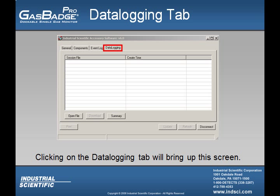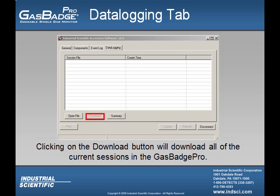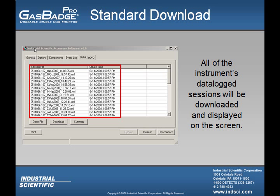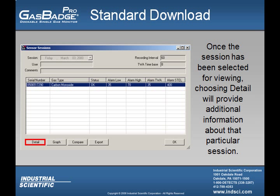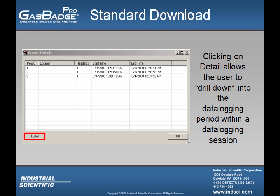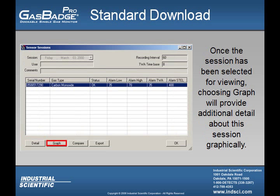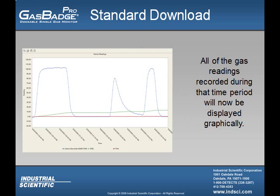If the user clicks on the Data Logging tab, they will see the data logging screen. Clicking the Download button, the Datalink software will download all of the current sessions within the Gas Badge Pro, and all instrument sessions will be displayed on the screen. If the user wants to open one of the sessions, they must highlight the session and click on the Open File tab. Once that session is open, they can click on the Detail tab for additional information, and drill down into the specific data logging period they want to view. The user can then click on the Graph tab and the Datalink software will display the session information graphically, showing all readings the instrument saw during the session.